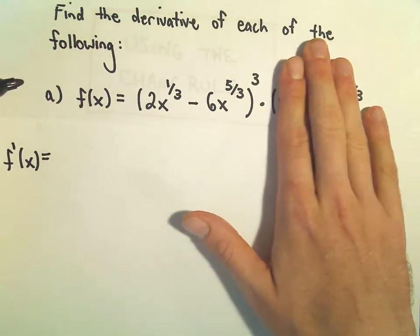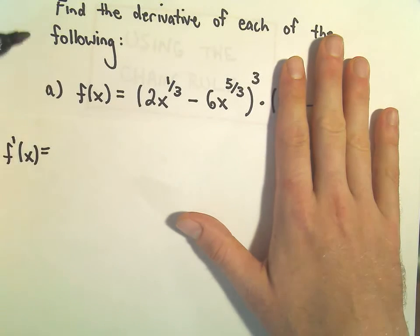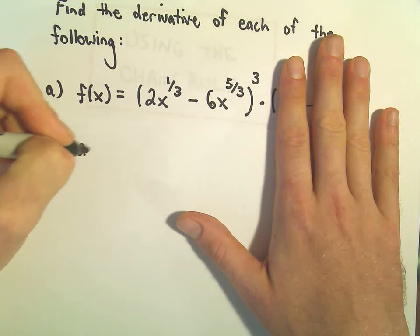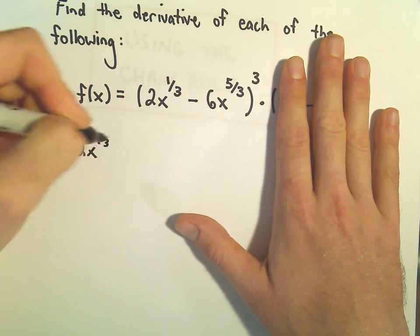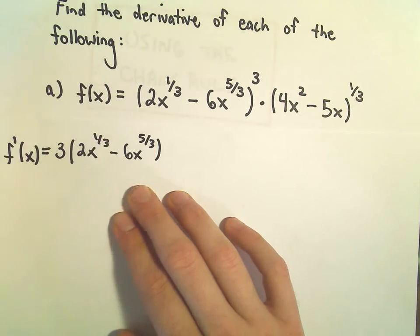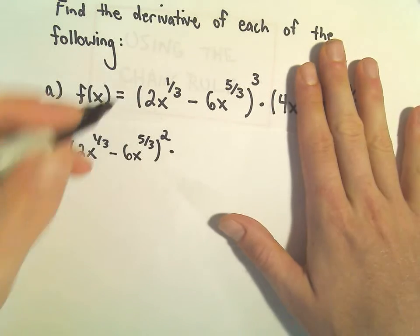To take the derivative of 2x to the 1/3 minus 6x to the 5/3 cubed, the first thing we would have to do is the 3 would have to come out front. So then we would leave all the inside alone: 2x to the 1/3 minus 6x to the 5/3. We would have to subtract 1 from the exponent. But now I have to do the chain rule. I have to take the derivative of the stuff on the inside.